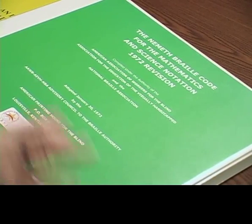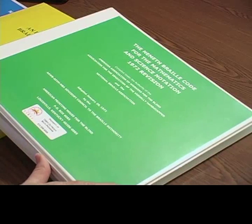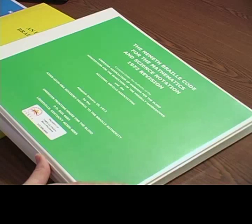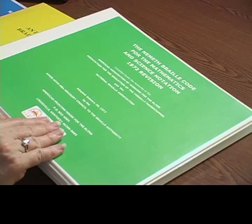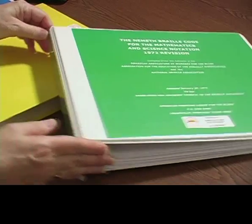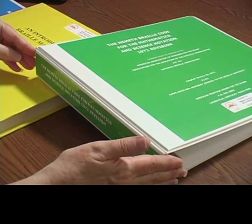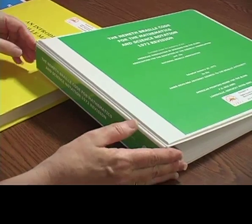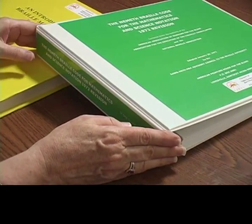This green book, and it does have white letters on it, this is the official Nemeth Braille Code for Mathematics and Science Notation. And this is what I would call the Bible, or the code. The official book is going to be green. In this particular case, it is in binder form, but a lot of you may have an older version of this that is hard bound. Don't panic. You're looking for the green book.